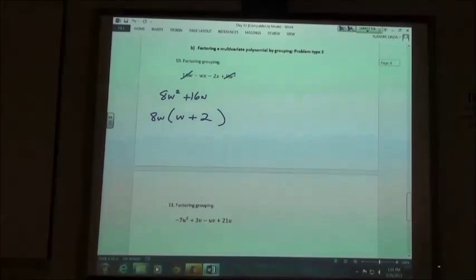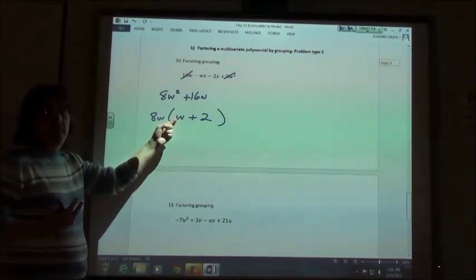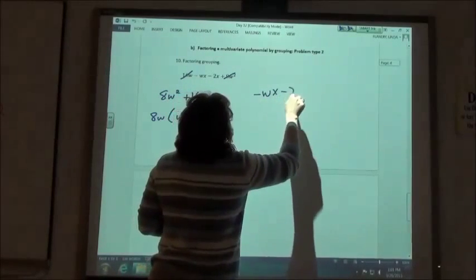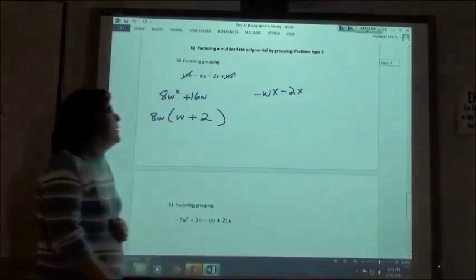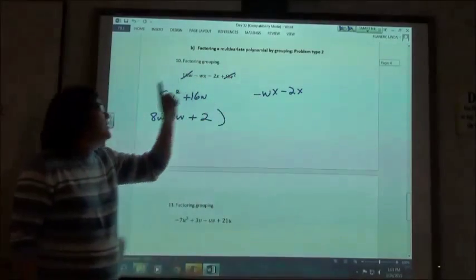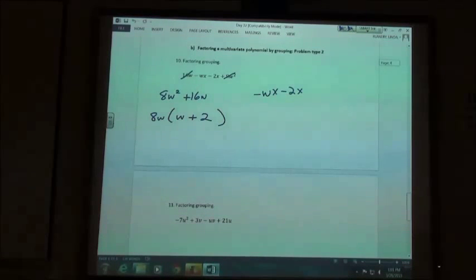So again, when I'm writing down the other two terms, I look to see what I want to have first. I want the one with the w first. So I'm going to have the minus wx and the minus 2x. And then I'm going to say, what do I need to divide the minus wx by to get a positive w? A negative, not the w, but the x, the negative x.